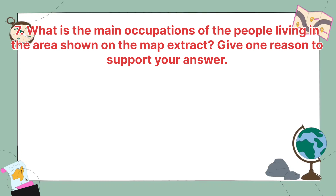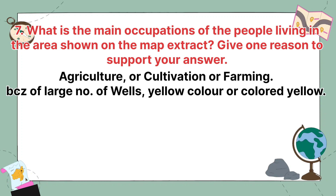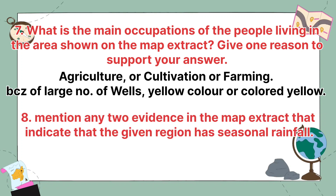What is the main occupation of the people living in the area shown on the map extract? Give one reason to support your answer. The main occupation is agriculture, cultivation, or farming. The reason is the presence of a large number of wells, plants, or the area is colored yellow indicating cultivable land.